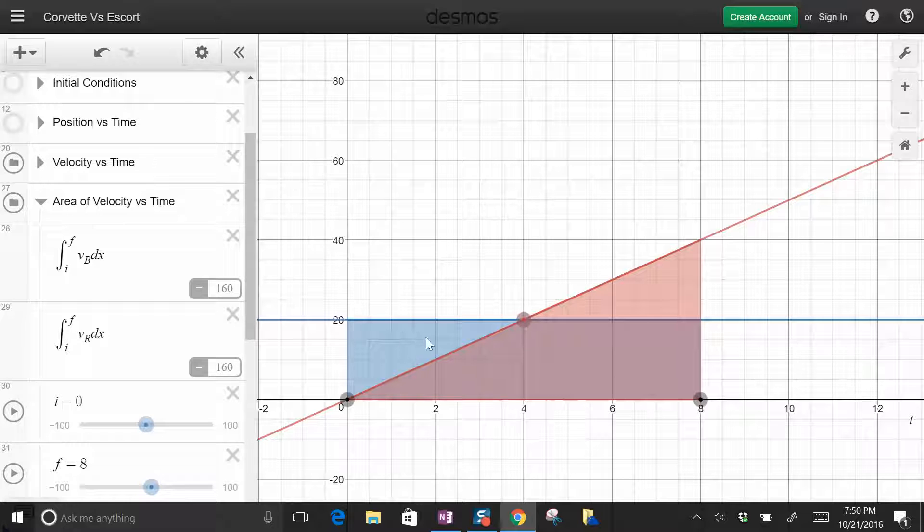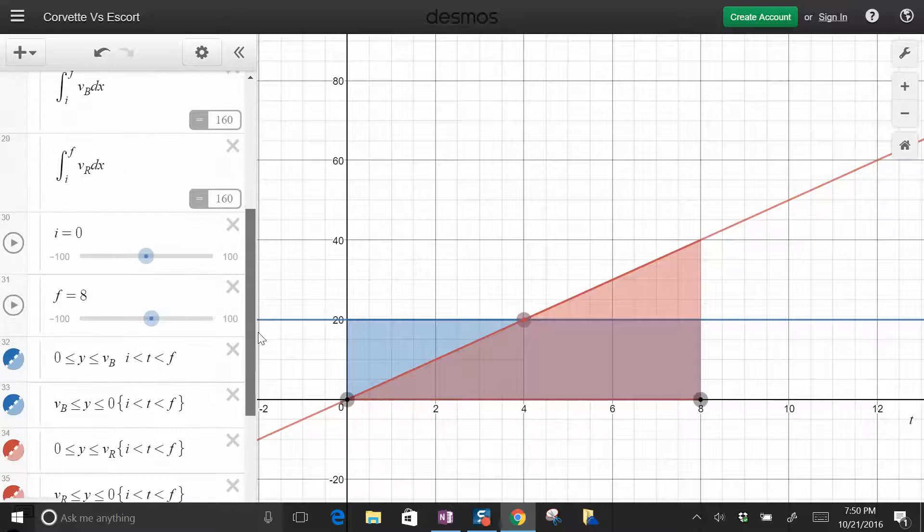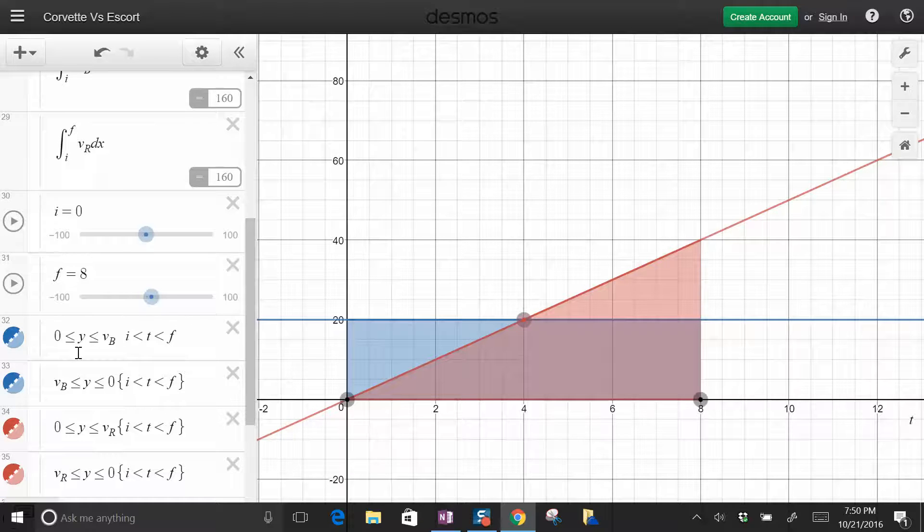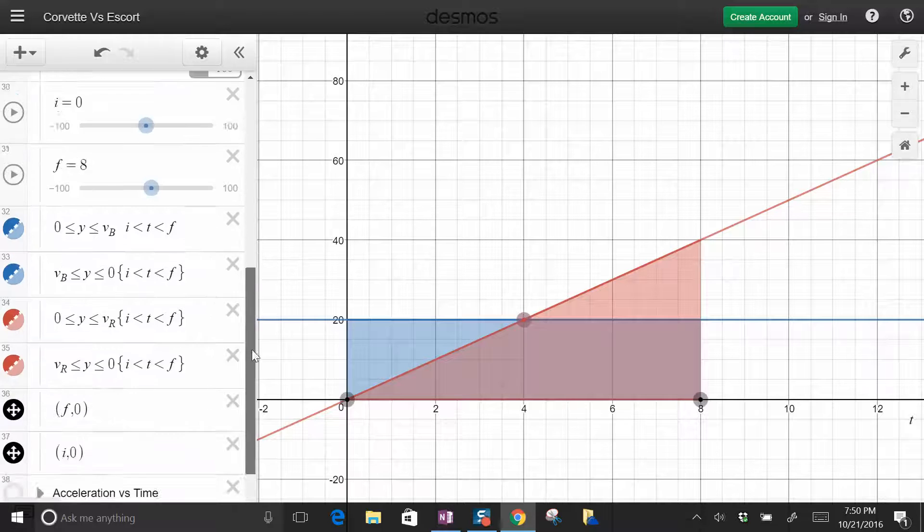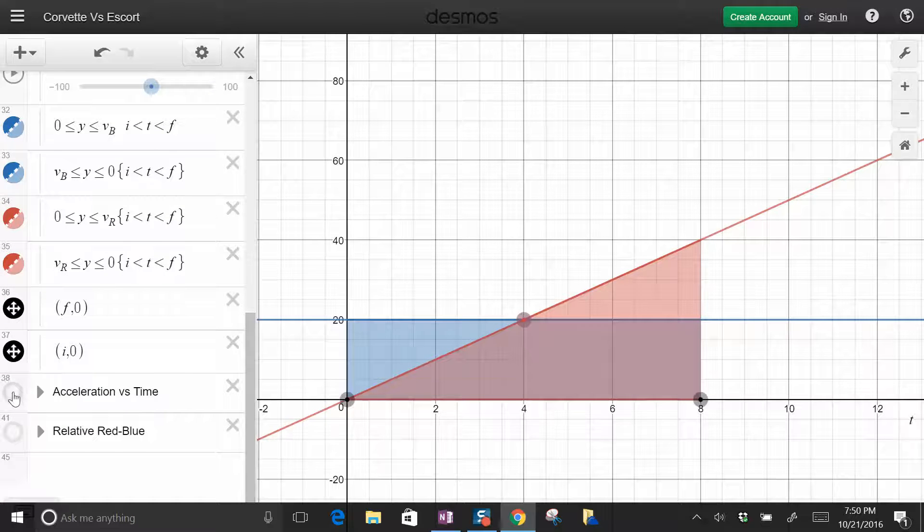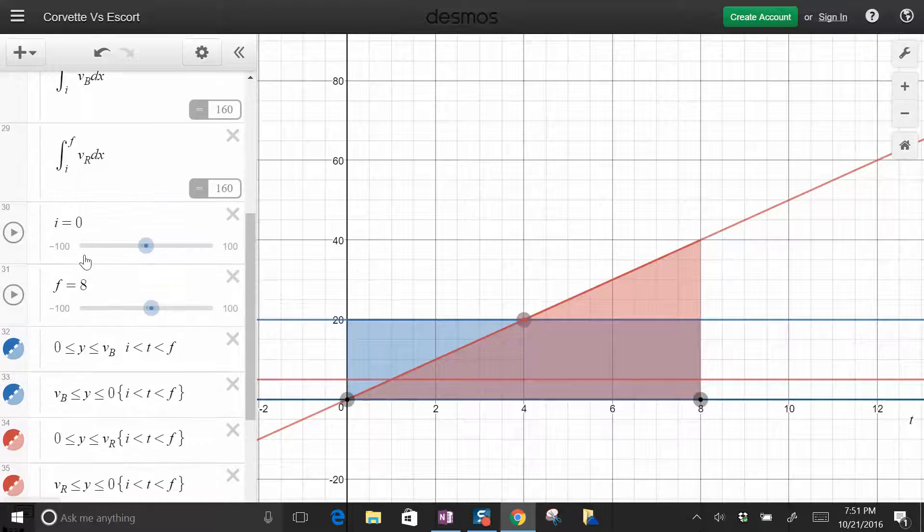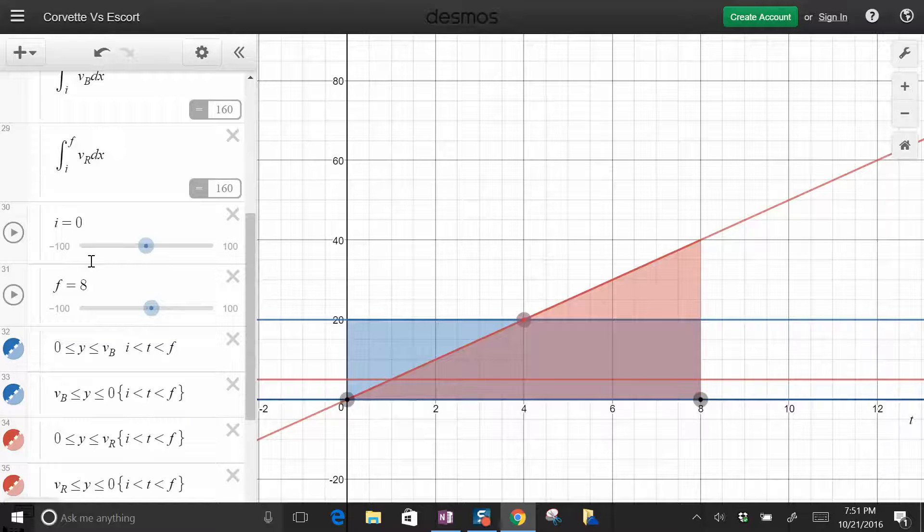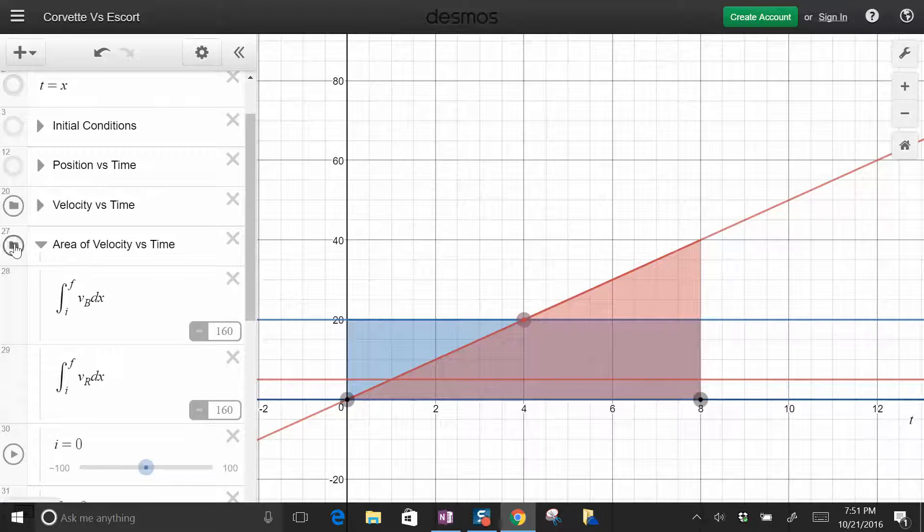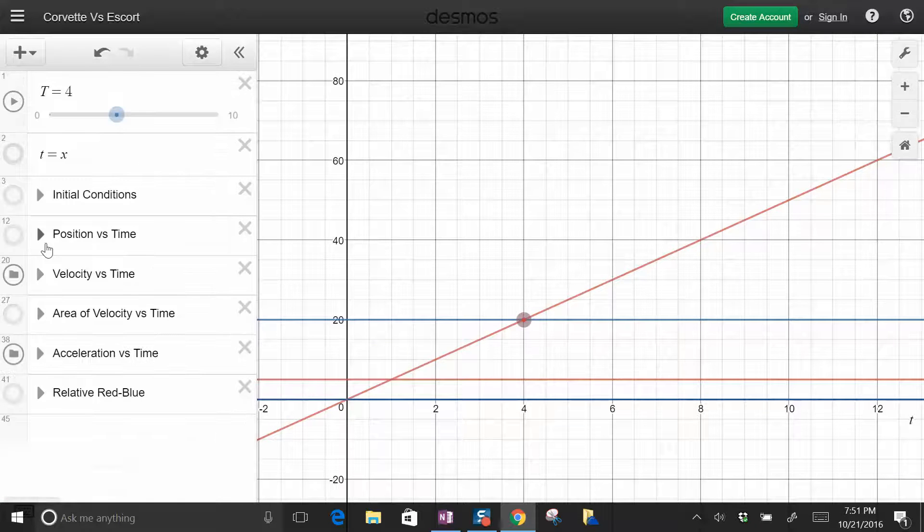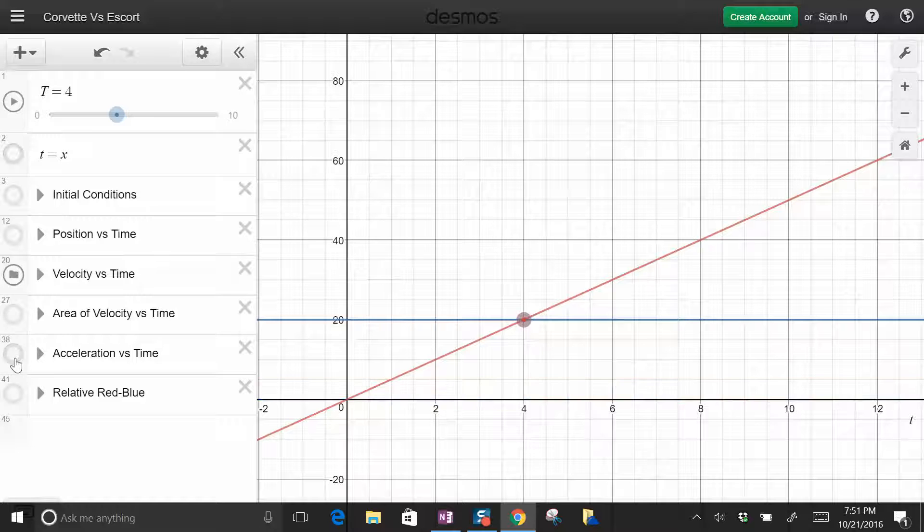Now, I could get into how it calculates the area, but Desmos will let you graph inequality. So that's really how I'm doing it. We can put acceleration versus time, although that's not the most interesting graph because this is constant acceleration. Here's the acceleration graphs.